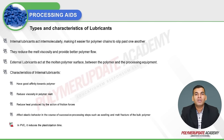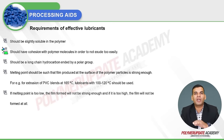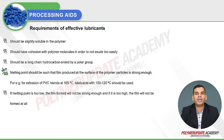In PVC, internal lubricants reduce the time required for plasticization of the polymer. An effective lubricant should be slightly soluble in the polymer and have cohesion with polymer molecules to not exude too easily, unless purposely used for exudation as in external lubricants. It should be a long-chain hydrocarbon ended by a polar group, and its melting point should be such that the film produced at the polymer surface is strong enough — too low and the film won't be strong, too high and the film won't form at all.